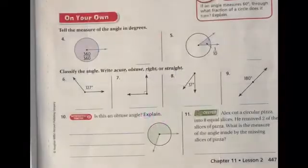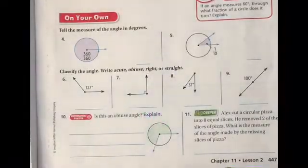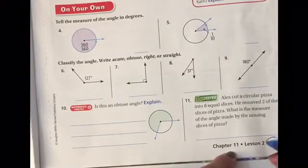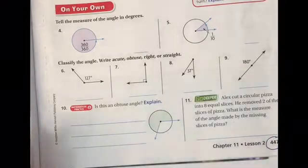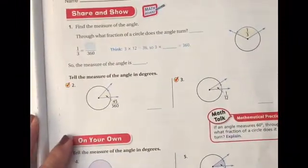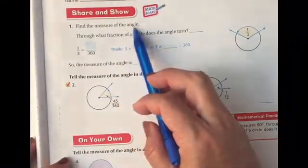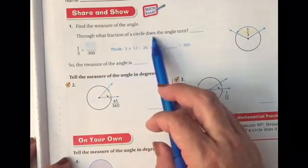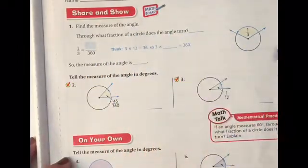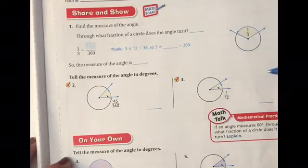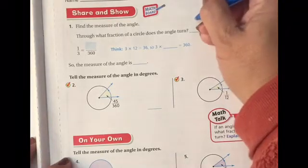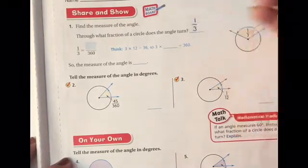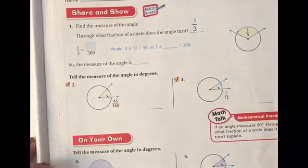So if you're ready, you should be on page 447 with me. So I look at the first problem right here, and it says, find the measure of the angle. Through what fraction of a circle does the angle turn? So they're talking about this picture right here. So I see that it turned 1/3 of a fraction of a circle. So I'm just going to put 1/3 right here.